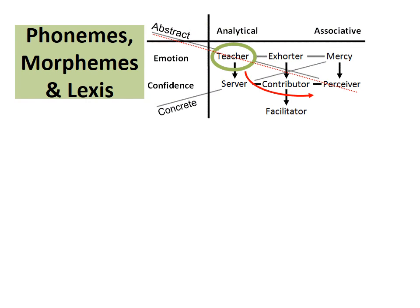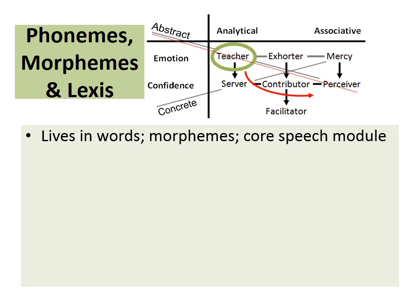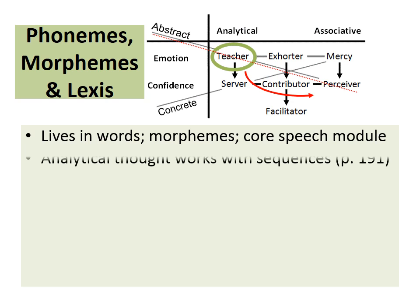Looking first at teacher thought: mercy thought acquires emotional experiences from the external world, whereas the raw material for teacher thought is words, and this is the building block for abstract thought. We are looking at phonemes, morphemes, and lexis. The teacher person lives in words — words are very important to the teacher person, and this cannot be overstressed.